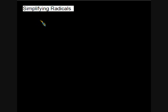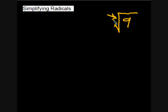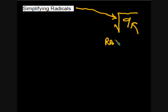Simplifying radicals — so much to say, so little time. You might recall radicals from something like the square root of nine. That symbol on top of the nine is known as the radical. The number underneath also has a special name — it's called the radicand. So that's the radicand, and this symbol is called the radical.